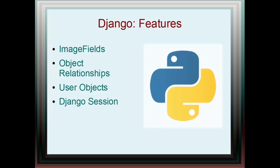We'll look at more complex object relationships, like how we can have objects related to other objects — many-to-many fields, one-to-many fields — and how to set these up in Django and access the individual objects we'll be creating.